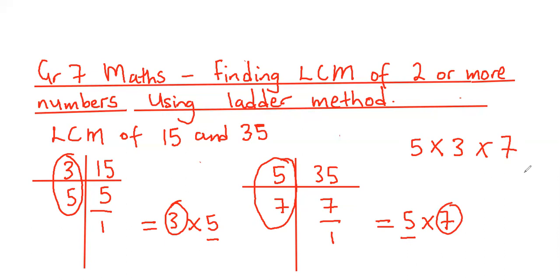So the answer finally will be 5 times 3 which is 15, and 15 times 7 is equal to 105. So the lowest common multiple of 35 and 15 is equal to 105.